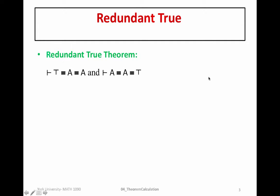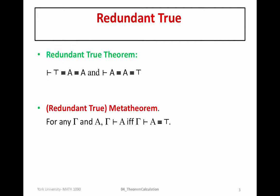The interesting thing about this redundant truth theorem — as an absolute theorem within logic — is that we can take this theorem from logic, study it from the outside in the meta-theory, and use it to identify some properties about logic. For example, we get the redundant true meta theorem, which says: for any collection of hypotheses gamma and any well-formed formula A, gamma proves A if and only if gamma proves that A is equivalent to top. We'll see later how this can be applied.